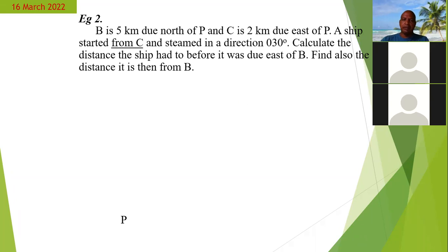So we say we started with the point P, then we go north of P to the point B, which is 5 kilometers. And then now from P again, we go east to C, which is 2 kilometers.